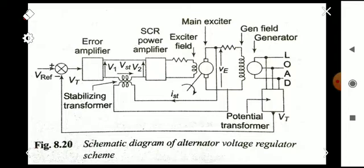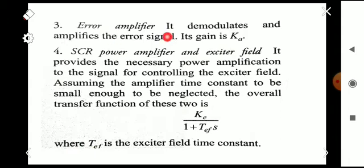We have already discussed the potential transformer and the differencing device. The error amplifier demodulates and amplifies the error signal, and its gain is denoted as Ka. This mathematical representation will be used at the end for generating the block diagram of the alternator voltage regulator scheme.